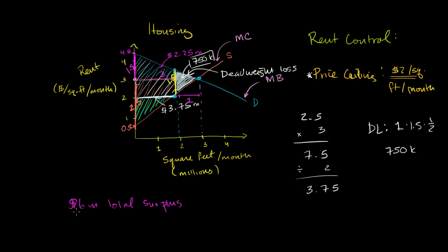Because of the $750,000 dead weight loss, total surplus drops from $6 million to $5.25 million. Rent control may have benefited renters who were able to get apartments, but it hurt renters who can no longer find one. It unambiguously reduced producer surplus and reduced the total surplus — the total amount of benefit the market as a whole was getting.